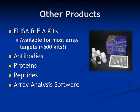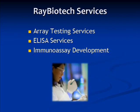Other products available at RayBiotech include ELISA kits for nearly all the proteins included within the arrays. We also sell a variety of individual antibodies, proteins, and peptides, as well as software for the analysis of antibody array data. RayBiotech also offers testing services — researchers can ship their biological samples to us, and our experienced scientists will perform the antibody array experiment. We also offer ELISA service, as well as custom immunoassay development.